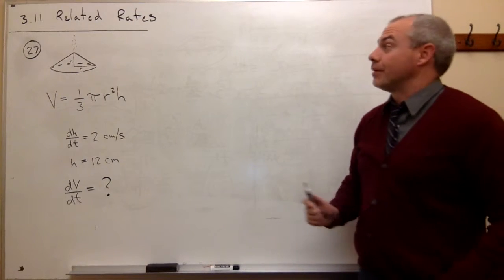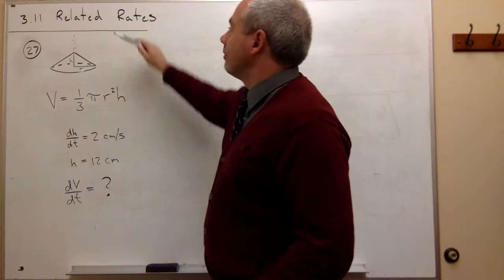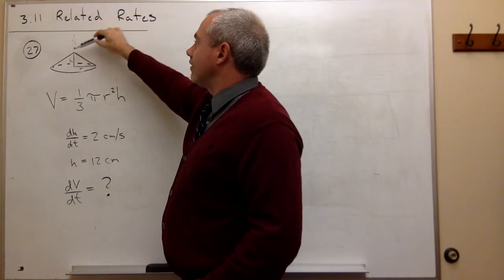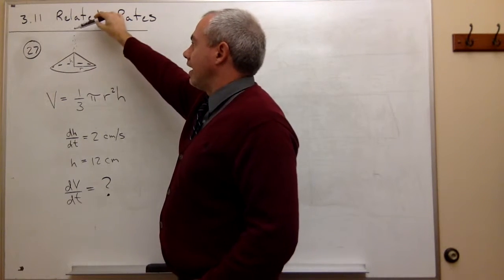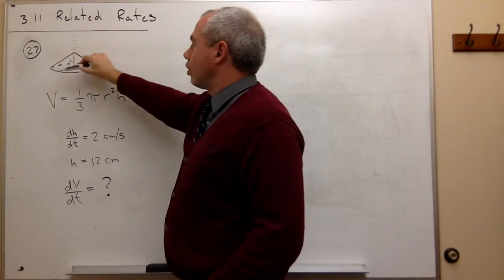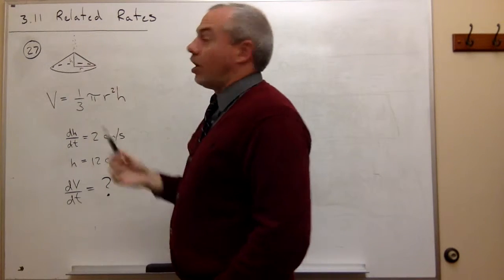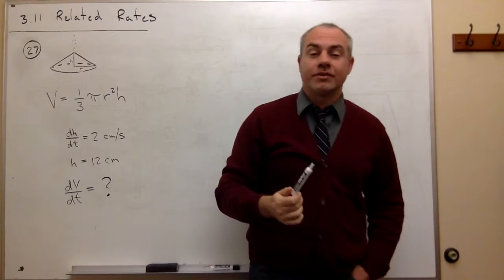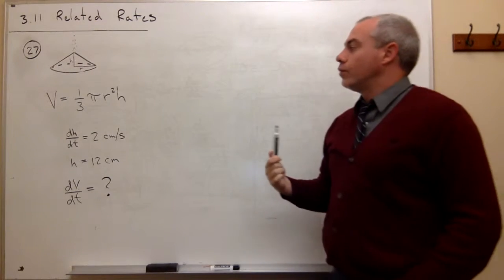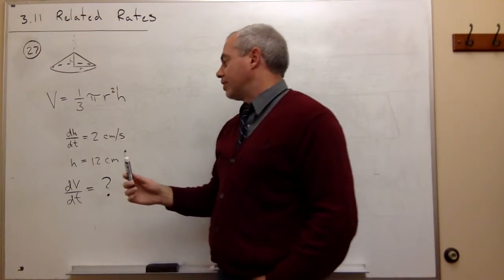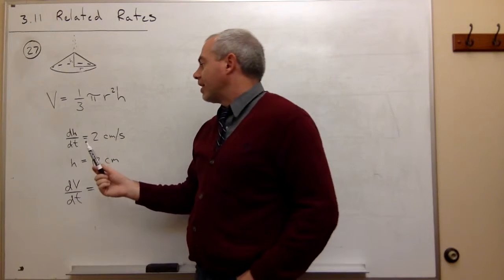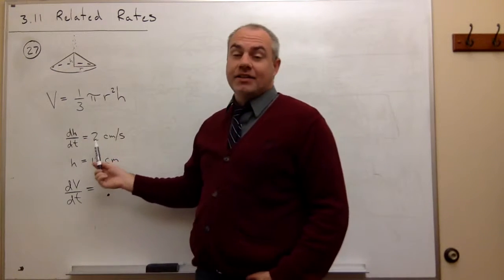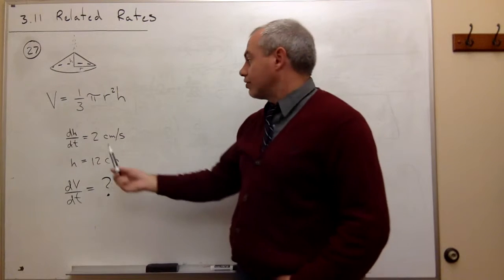Now let's take a look at problem number 27. In problem number 27 we have sand falling from a bin, and as it falls from that bin it's forming this conical pile on the ground. We are given a few pieces of information here. One of those pieces of information is that the height of the cone is increasing